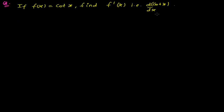So let's start our calculation as we were doing in the previous video. We have to do this again using the first principle method. We are going to find out the value of the derivative of cot x. So here, what you have learned is that the derivative of any function f of x is represented by f prime of x.